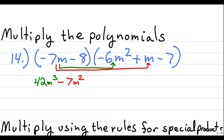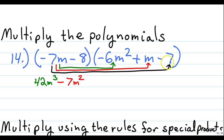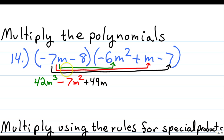Now we're going to distribute our negative 7m to our third term. Negative 7 times negative 7 makes a positive 49, so plus 49. We don't have an m on the other side, so we just carry the m down as is. So now we've distributed this negative 7m to each of the individual terms in our trinomial.